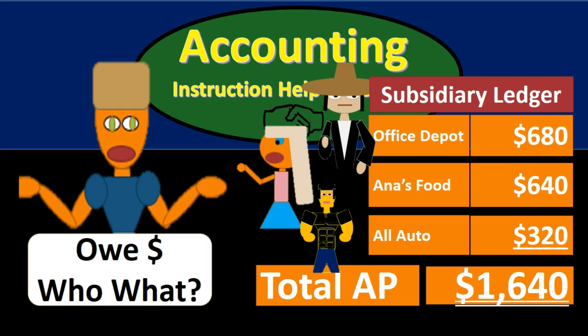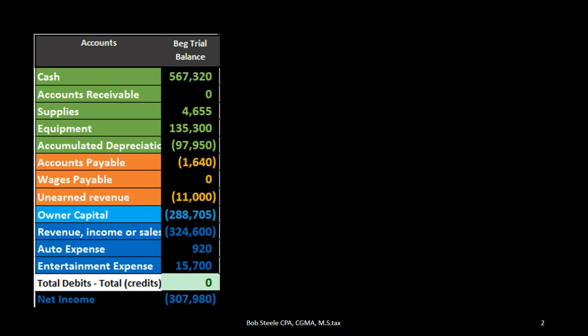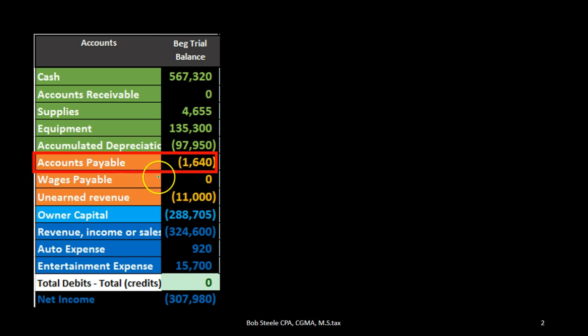In this lecture we're going to talk about the accounts payable subsidiary ledger. The accounts payable subsidiary ledger will be backing up the accounts payable account on the trial balance or the balance sheet. As we can see in the example here, we have a balance of $1,640 in accounts payable. If an owner asks how much money do we owe to vendors, the answer would be $1,640, which we can see on the balance sheet or the trial balance.